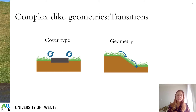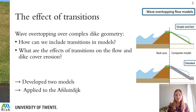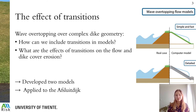It is important to take these types of effects into account when modeling complex dike geometries. So, if we want to model wave overtopping flow over a complex dike geometry, we need to take the effect of transitions into account. The questions we raised are: how can we include transitions in models, and are we able to answer what are the effects of transitions on the flow and dike cover erosion? To answer these questions, we have developed two models, schematized in the figure.